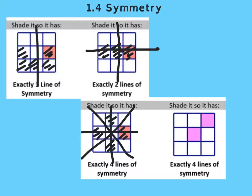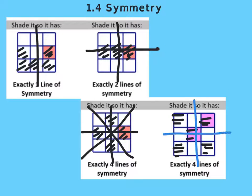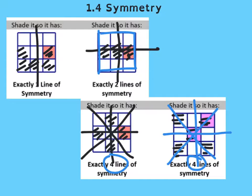That would work and so would this one. This one has a little bit different starting environment, so I would try this as my shading. This would cut it, this would cut it, the diagonals would work, and so we'd get exactly four. Always remember that it deals with all nine squares in this particular case, not just the ones you shaded.